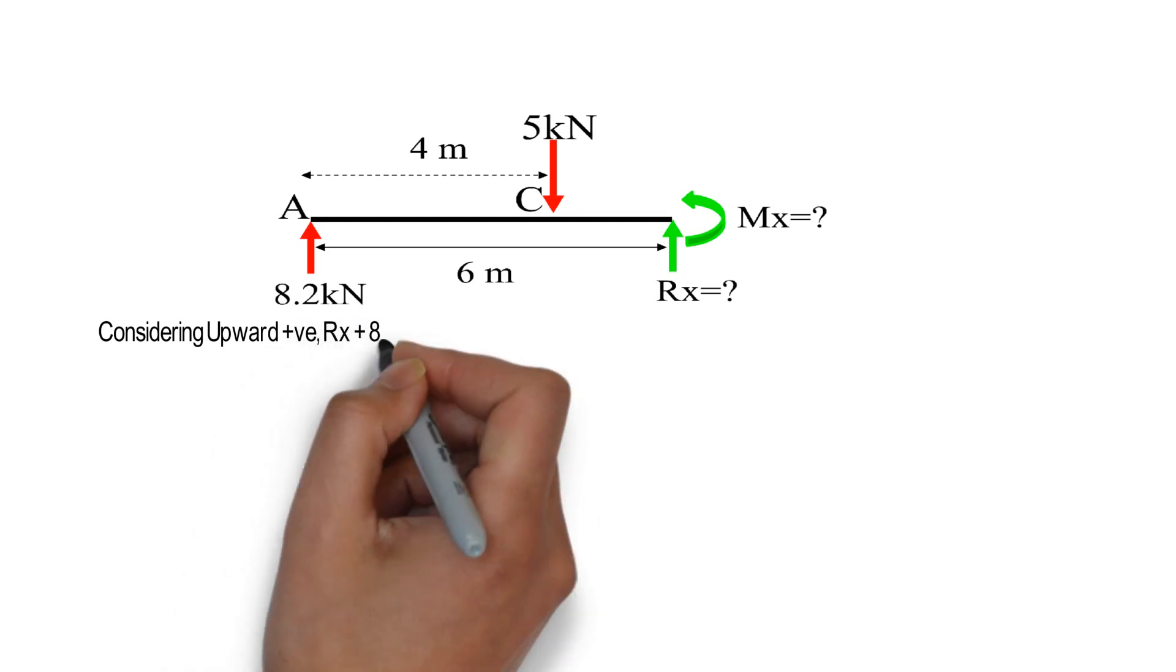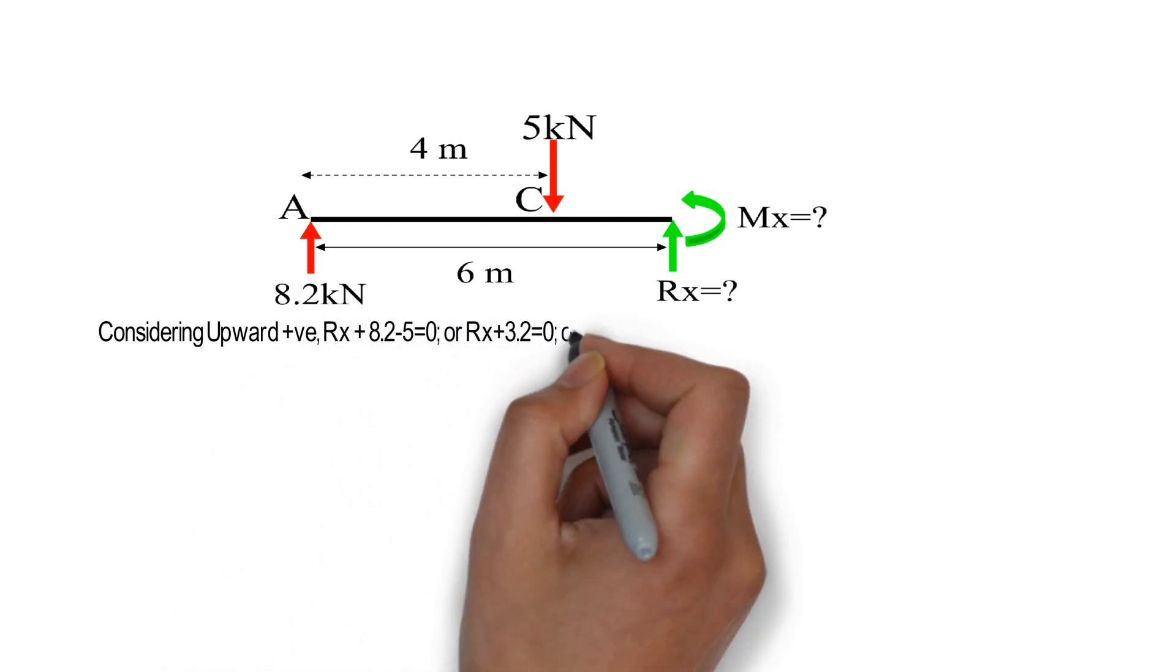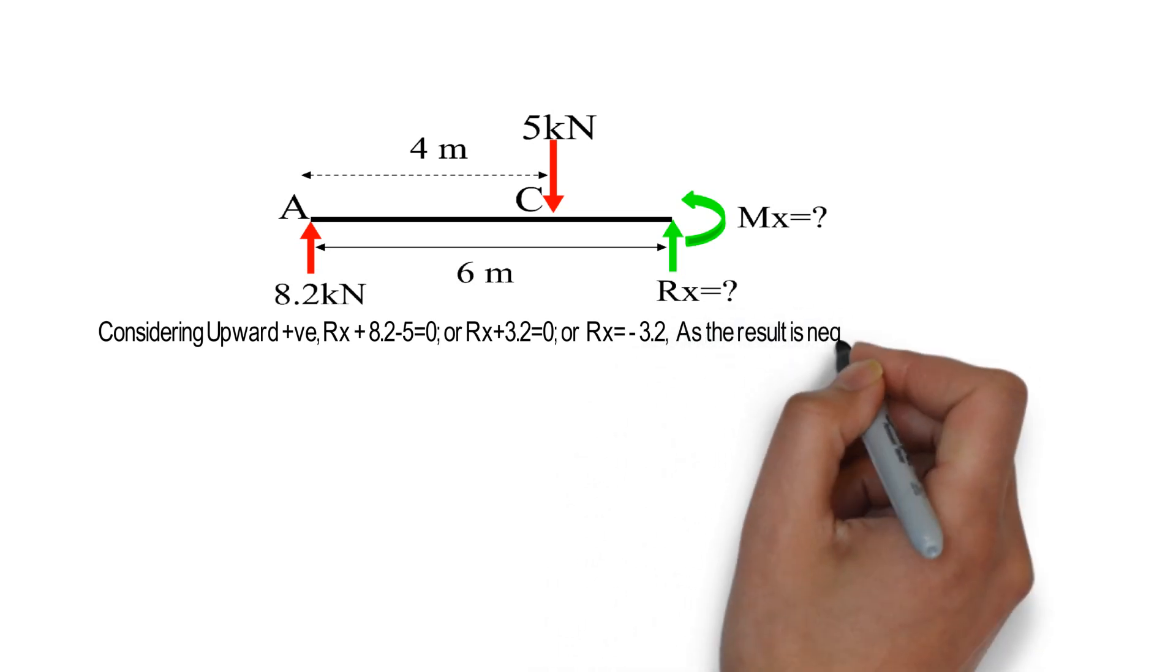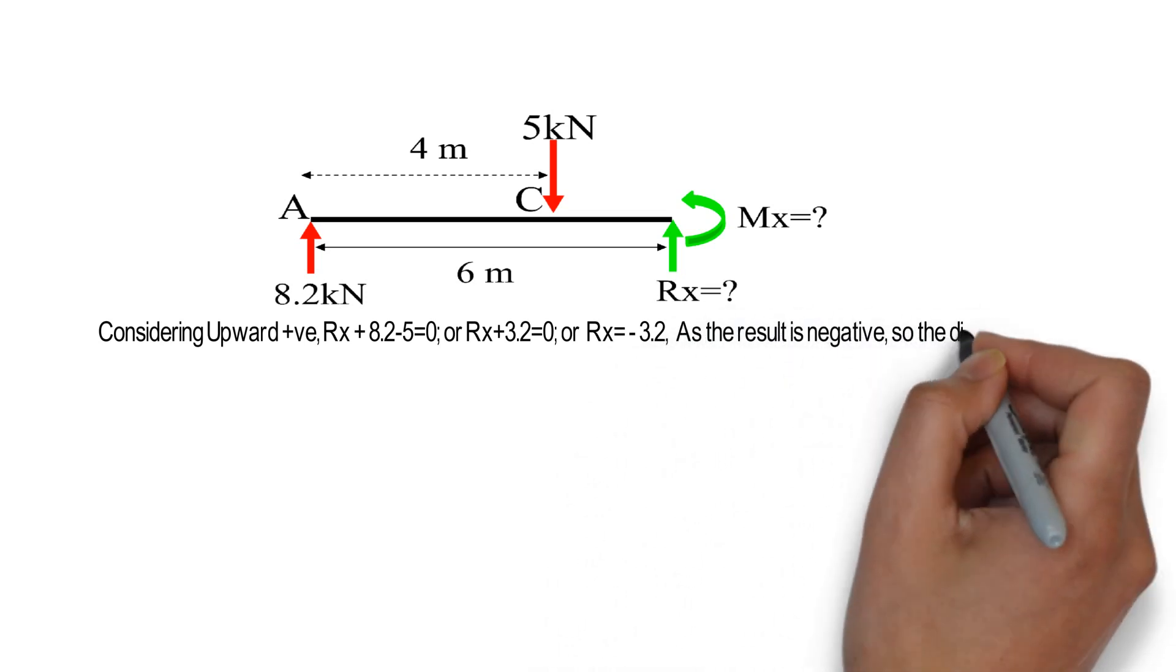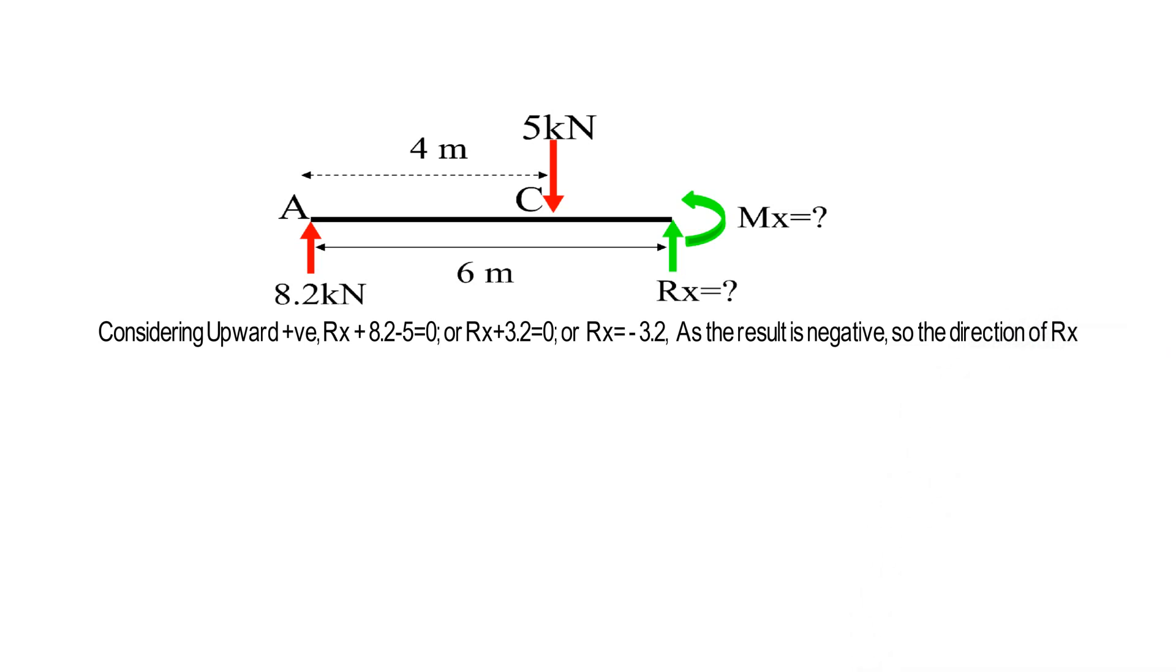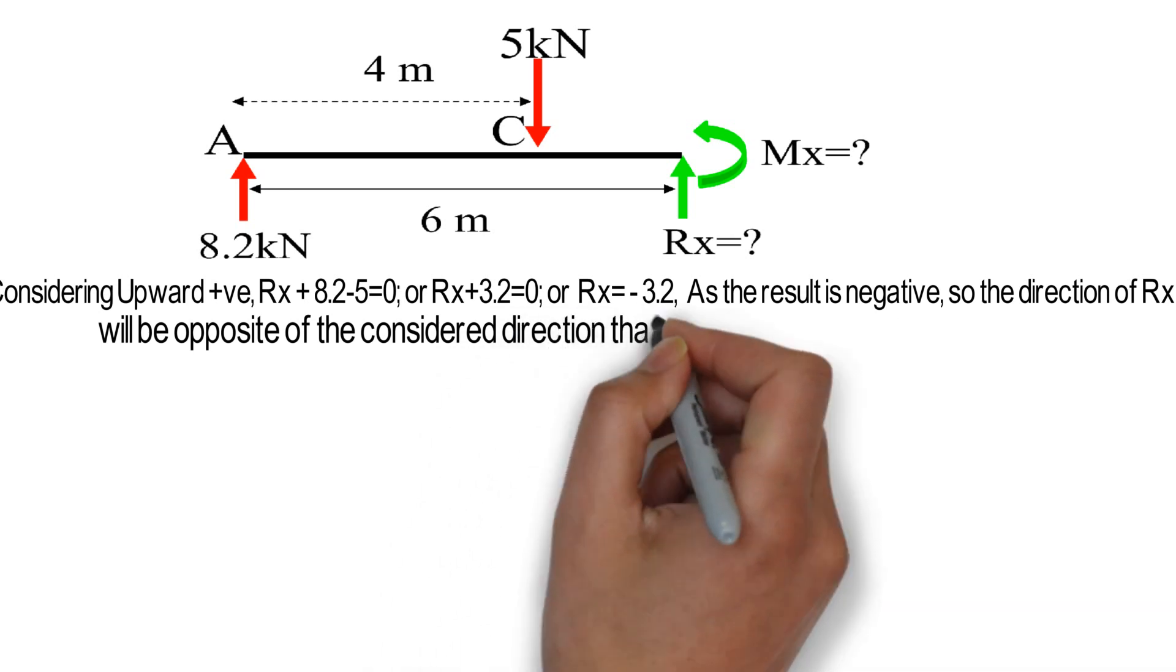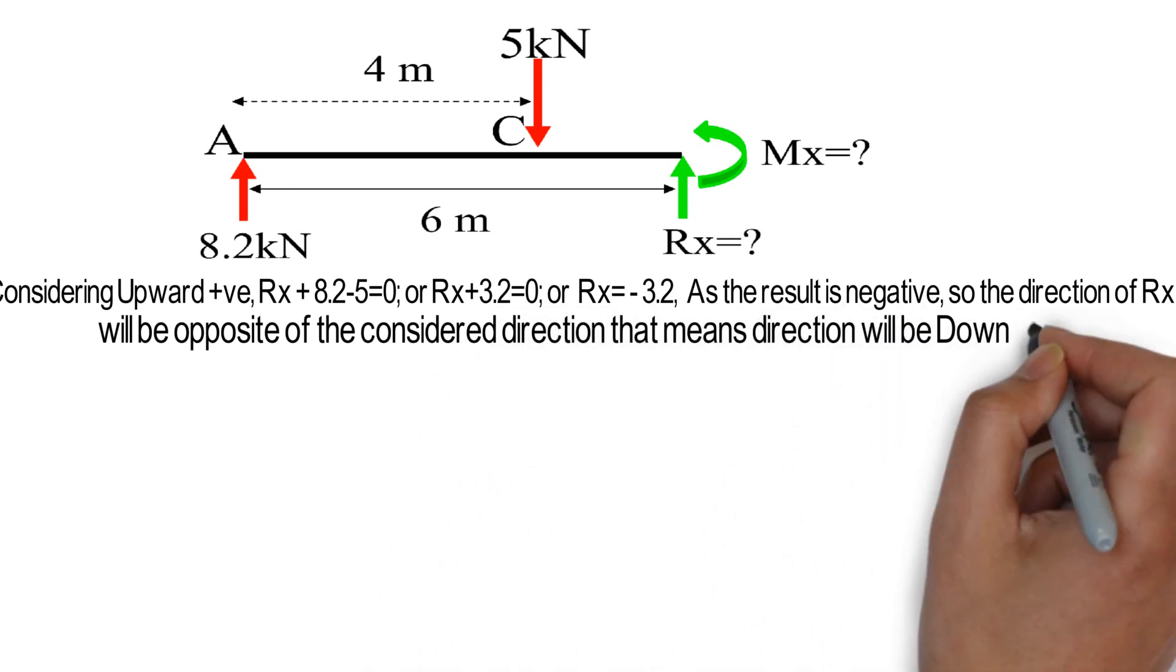Considering upward positive, RX plus 8.2 minus 5 equals 0, or RX plus 3.2 equals 0, or RX equals minus 3.2. As the result is negative, so the direction of RX will be opposite of the considered direction. That means direction will be downward.